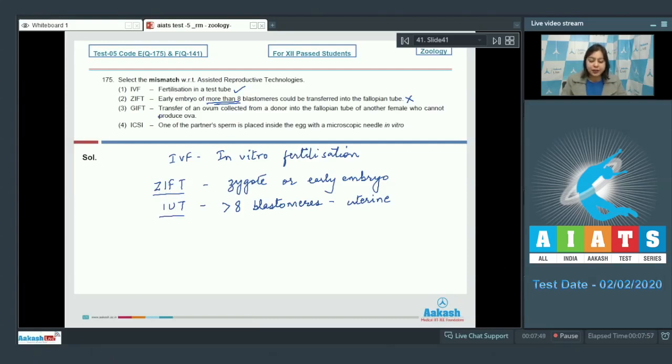Number 3, GIFT that is gamete intrafallopian transfer. Transfer of an ovum collected from a donor into the fallopian tube of another female who cannot produce ova. This is also a correct statement as transfer of gamete occurs in gamete intrafallopian transfer. Number 4, ICSI that is intracytoplasmic sperm injection. One of the partner's sperm is placed inside egg with a microscopic needle in vitro. This is also a correct statement. So the incorrect statement is option number 2. Moving on to the next question.